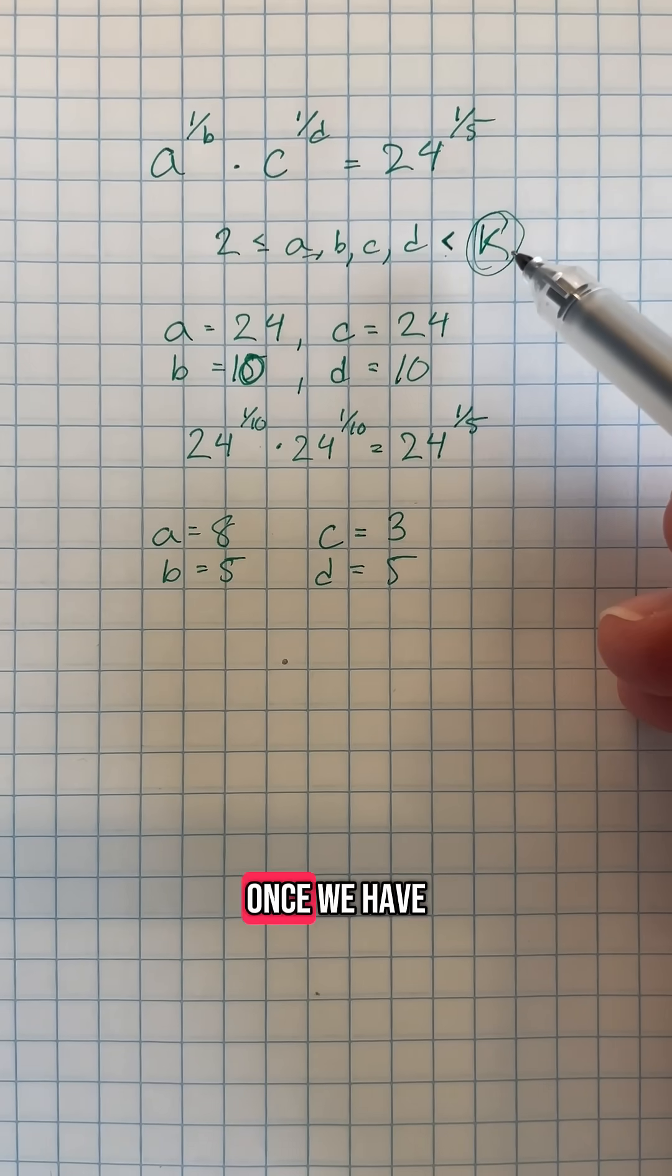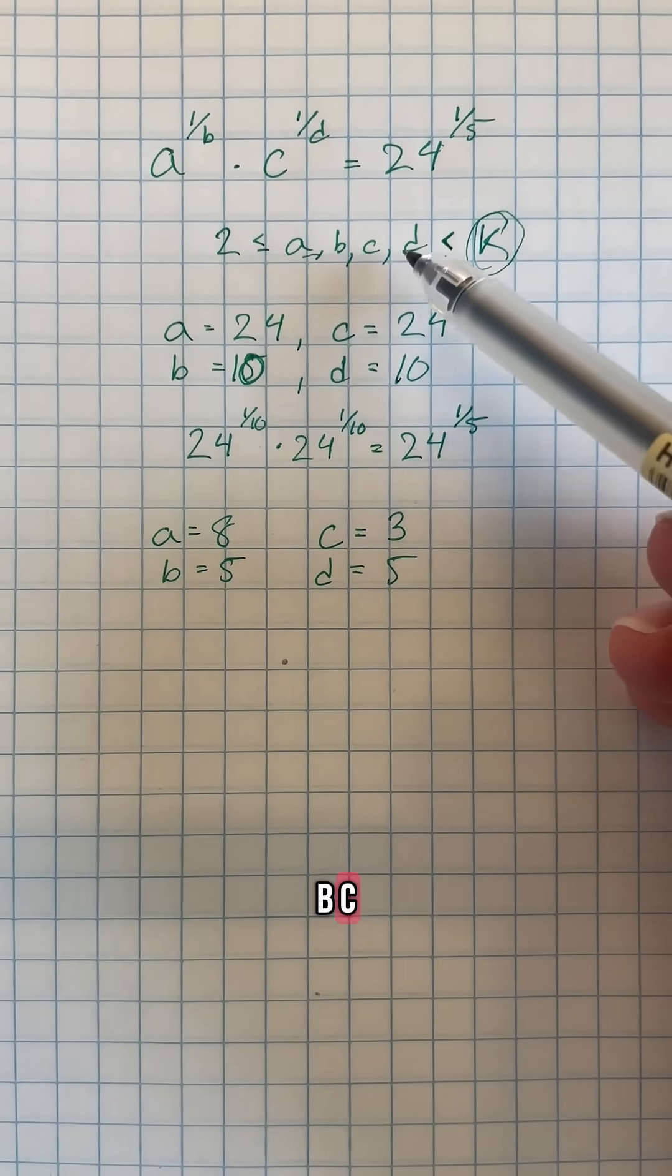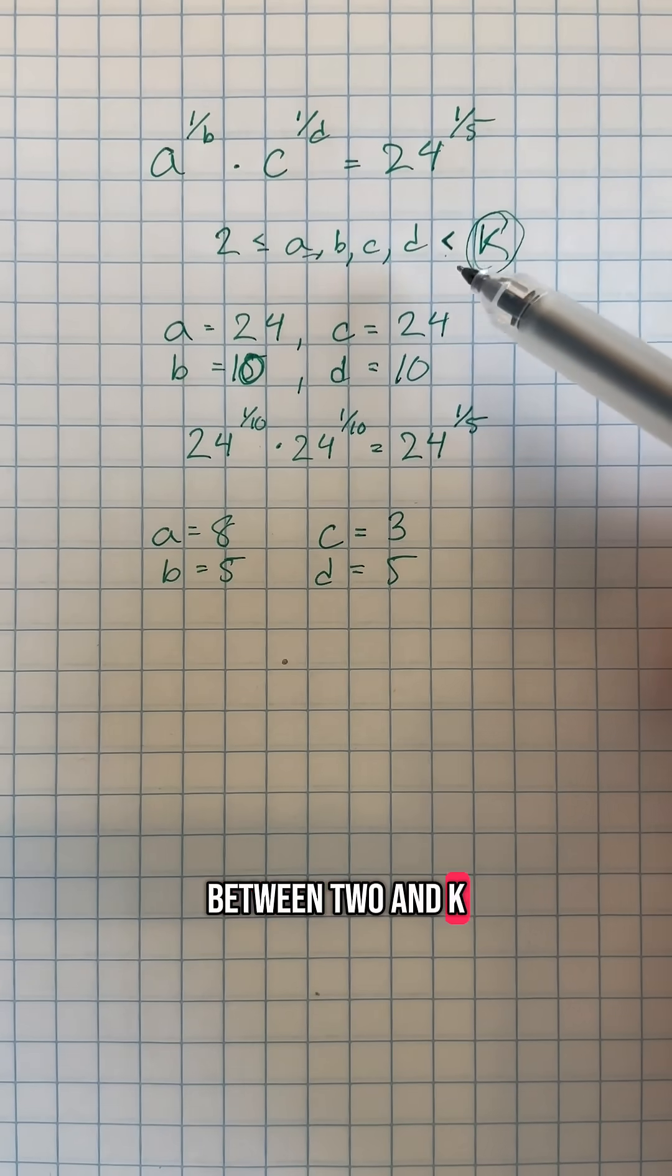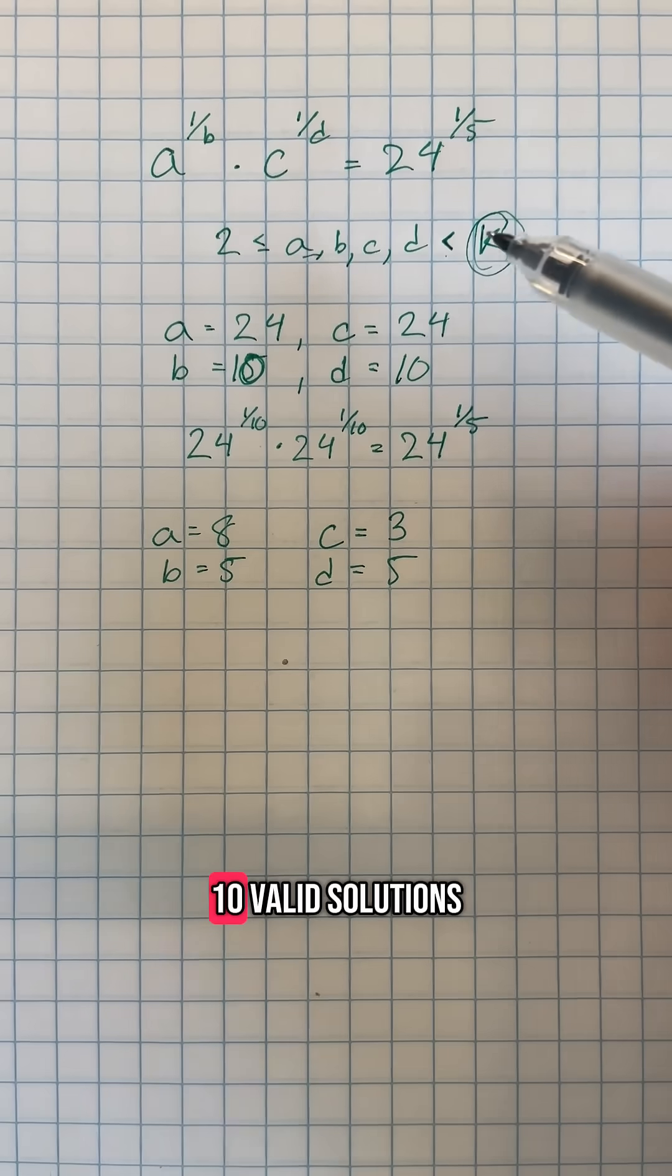From here, what we are going to do is once we have chosen our value of k, we are going to count the number of valid solutions where a, b, c, and d are between 2 and k. So for example, if I was to say that k is equal to 30, maybe there are 10 valid solutions.